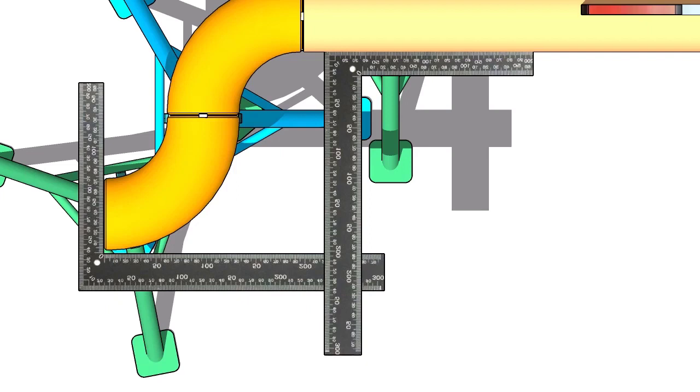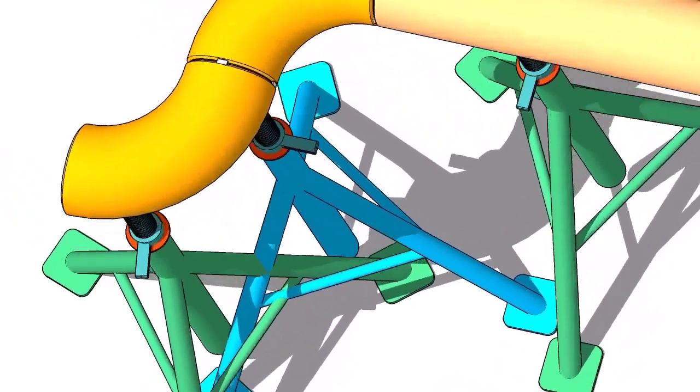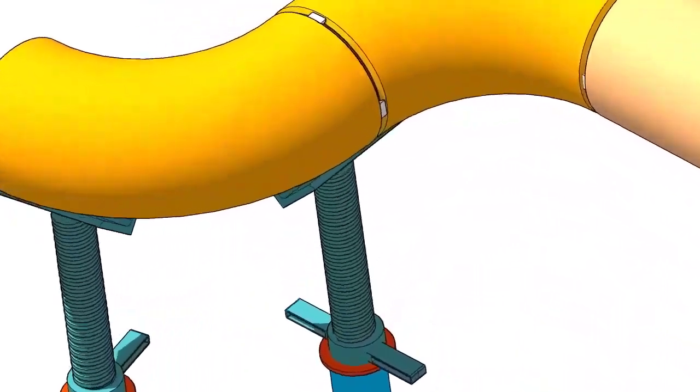Hold two right angles, one on the face of the elbow and one on the pipe side. Now use another right angle and check the squareness, tack weld on both sides of the elbow.